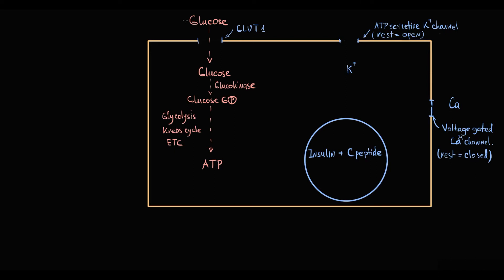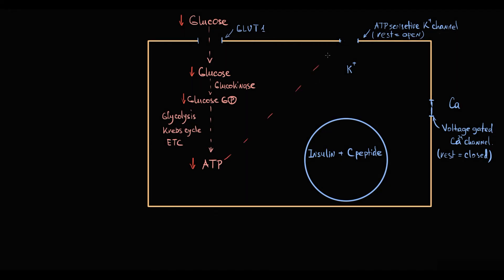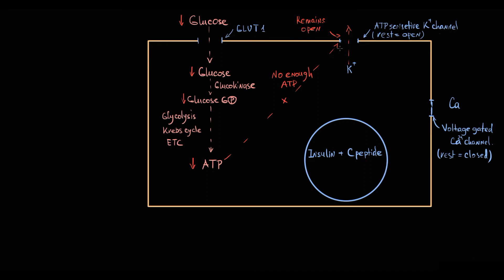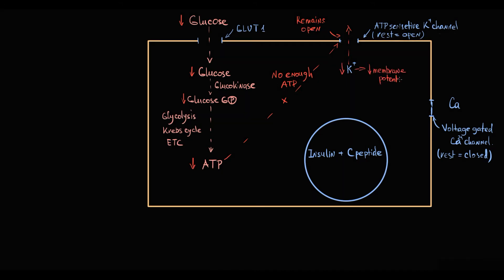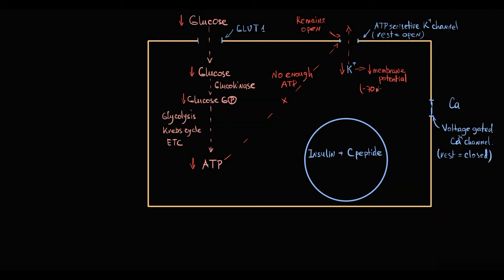If blood glucose level is low, a lower amount of glucose enters the cell, resulting in production of a lower amount of ATP. The amount of ATP is insufficient to close potassium channels. If potassium channels remain open, potassium flows out of the cell by concentration gradient, and decreasing positively charged potassium inside the cell causes membrane potential to decrease. When membrane potential becomes more negative, for example from −70 to −80 mV, this state is called hyperpolarization. In the hyperpolarized state, calcium channels cannot be activated, and therefore insulin cannot be secreted.